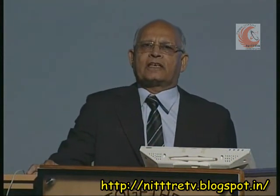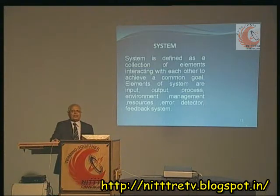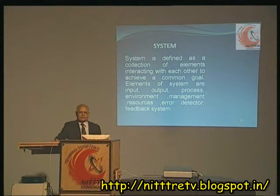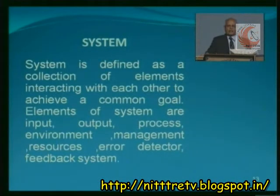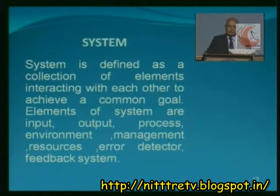A system is there whenever certain objectives are to be fulfilled. The parts of a system are input, process, output, management, resources, and feedback. A system is defined as a collection of elements interacting with each other to achieve a common goal or objective. The input elements of a system are input, output, process, environment, management, resources, error detector, and feedback system.